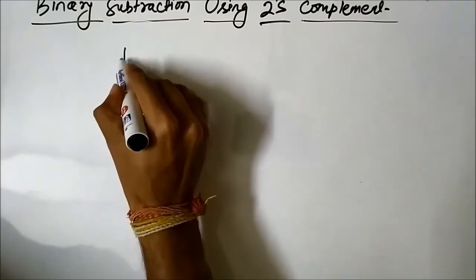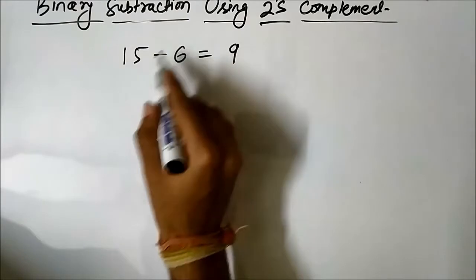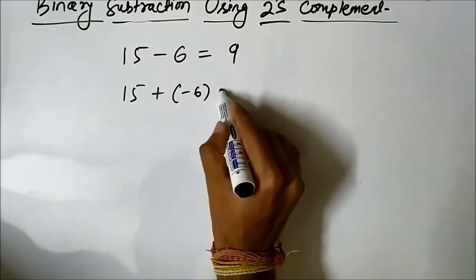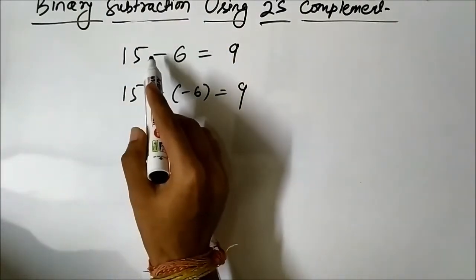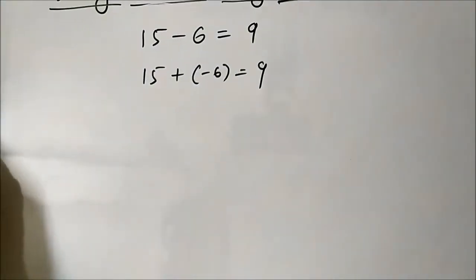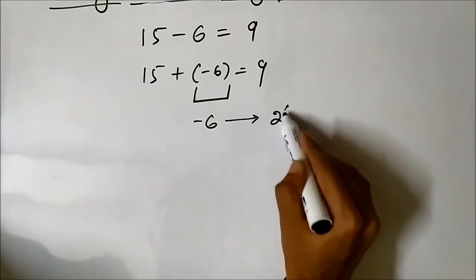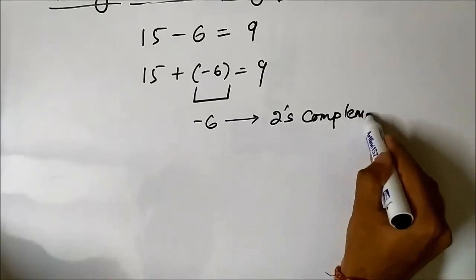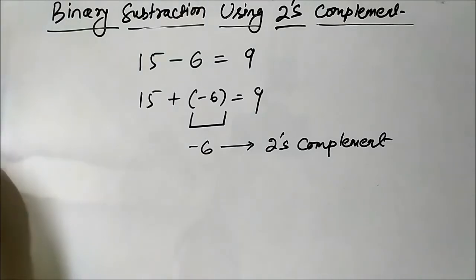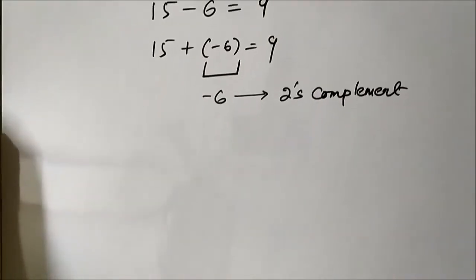Let us take an example. Suppose we have to perform the subtraction operation 15 minus 6, which equals 9. We can write this expression as 15 plus minus 6. In this way we have converted this subtraction operation using 2s complement into a modified addition. The number minus 6 will be represented using 2s complement, and we perform the addition of the binary form of 15 and binary form of minus 6. The result will be 9 in binary form.